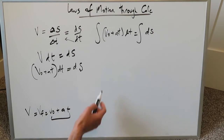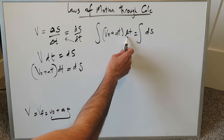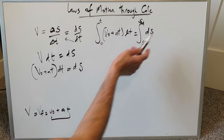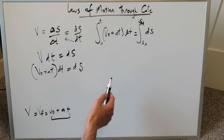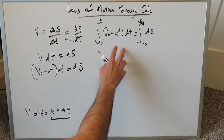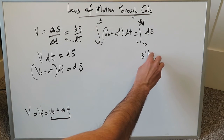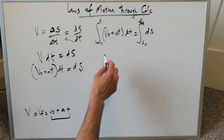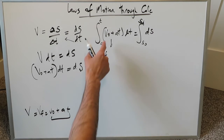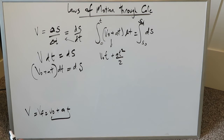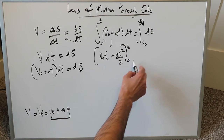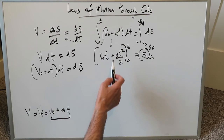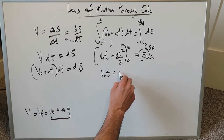Adding our intervals: the time variable runs from zero to t on the left, and the position variable runs from initial position s0 to final position sf on the right. Integrating the polynomial with respect to time: v0 integrates to v0 times t, and at integrates to a times t squared over two. Evaluating the definite integrals by substituting the upper and lower limits gives: v0 times t plus a times t squared over two on the left, and sf minus s0 on the right.